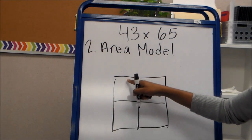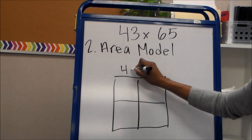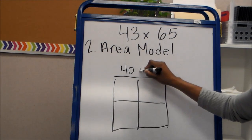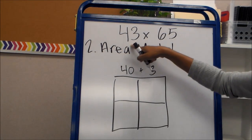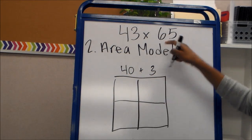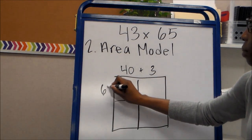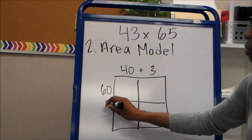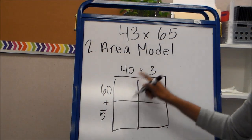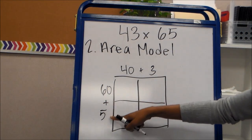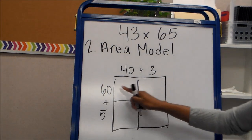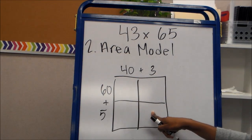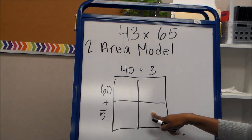So the first number is going to be 40 plus 3 because 43 written in expanded form is 40 plus 3. The second number is going to be 60 plus 5 because 65 written in expanded form is 60 plus 5. Then we're going to multiply and put our products in each of these boxes.